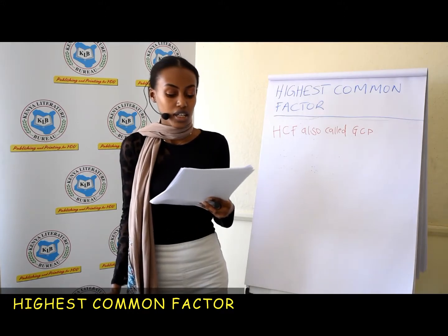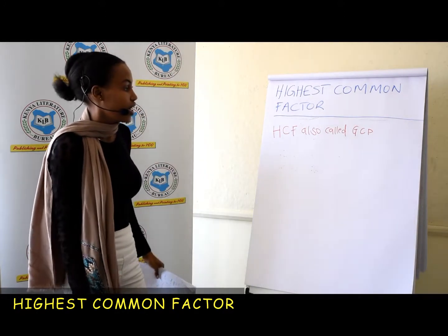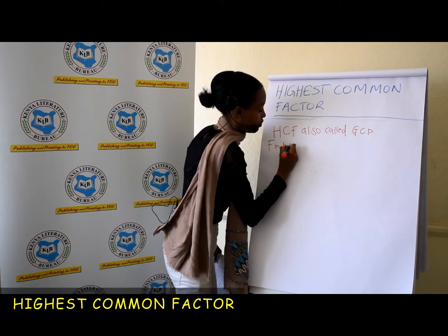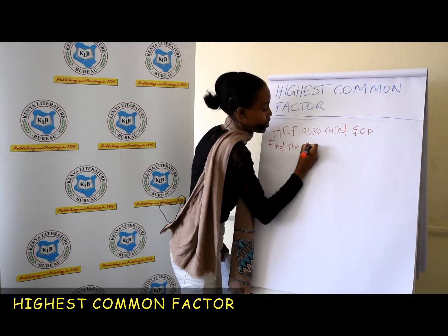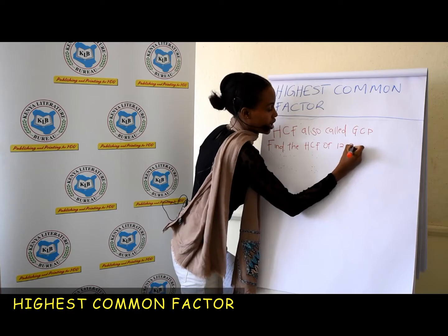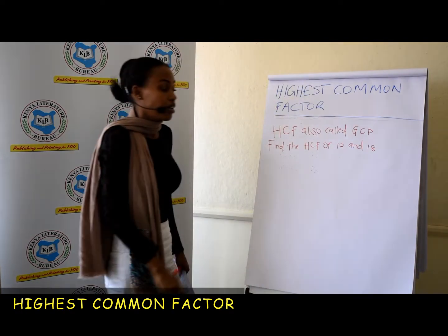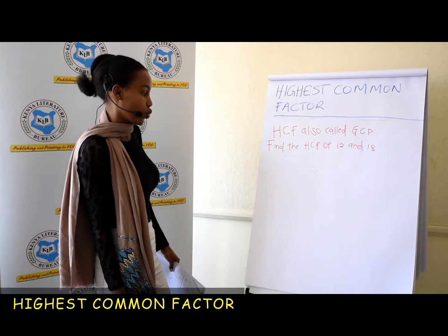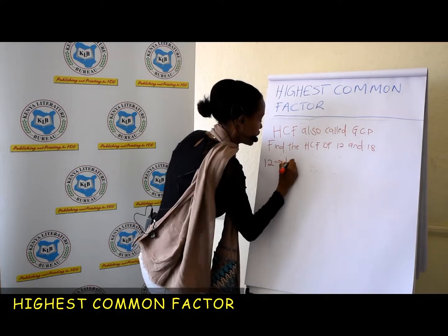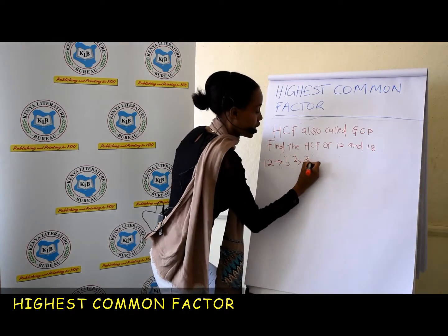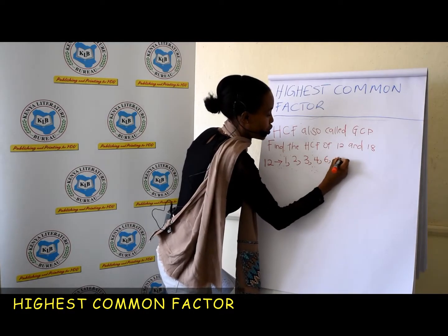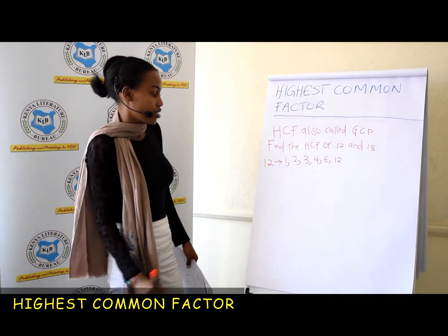If you are told to find the HCF of 12 and 18, you will begin by writing down the factors of 12. The factors of 12 are 1, 2, 3, 4, 6, and 12. And then you write down the factors of 18.